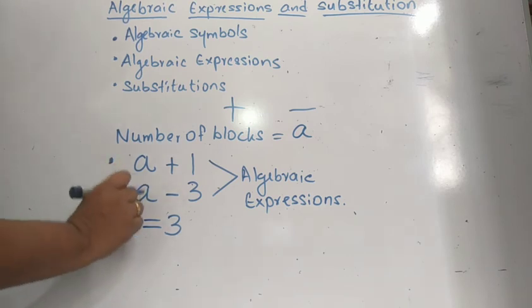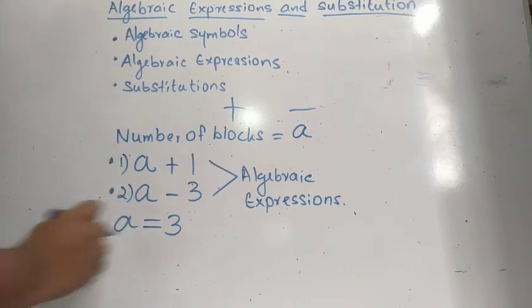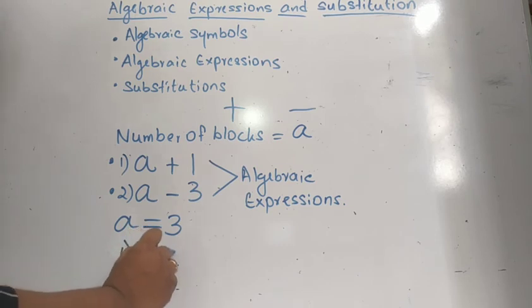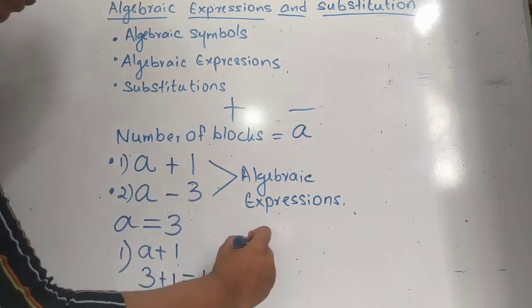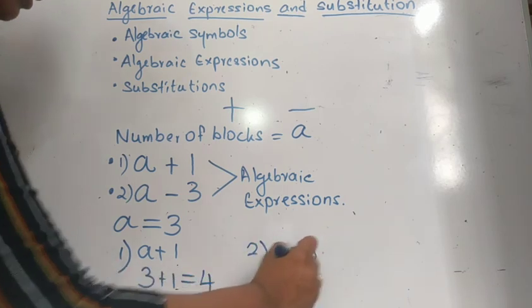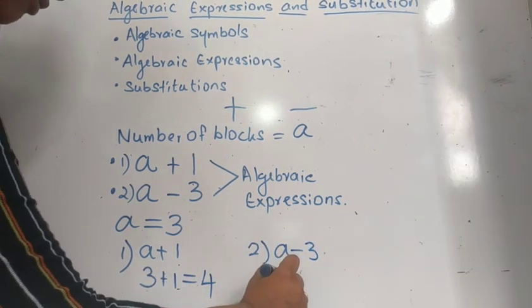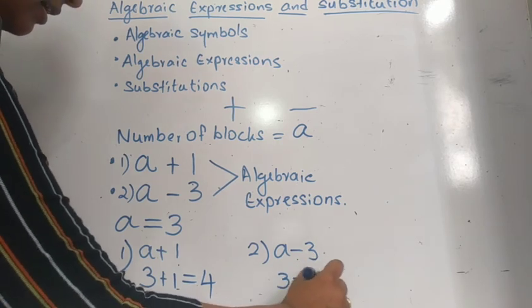We can substitute that among these two expressions. Let's substitute the value. A is equal to 3. Let's substitute it in the first Algebraic expression. A plus 1. A becomes 3 plus 1. The answer is 4. Let's do the same thing in the second. A minus 3. A gets the value of 3 minus 3. The answer is 0.